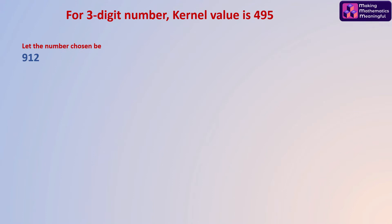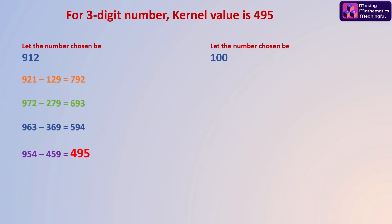For a three-digit number the kernel value is 495. Let me explain this using one example. Let the number chosen be 912. Check out the same method — largest minus smallest number — and with the newly formed number repeat the same procedure.